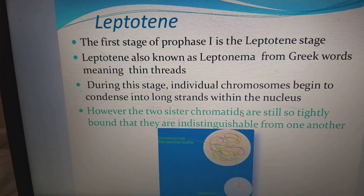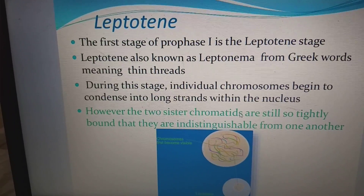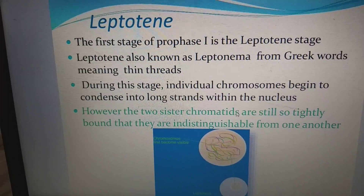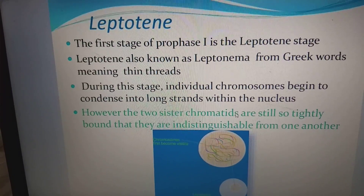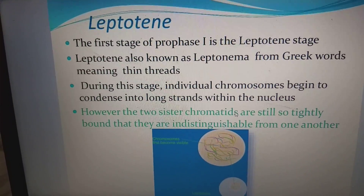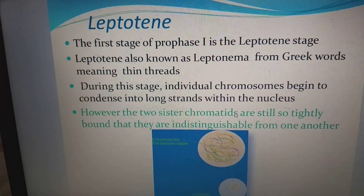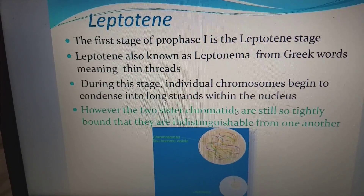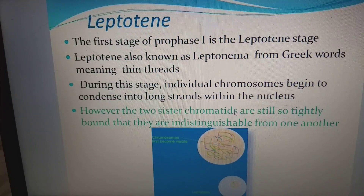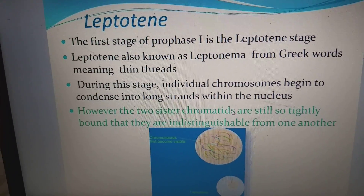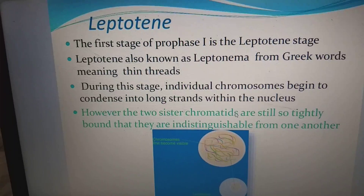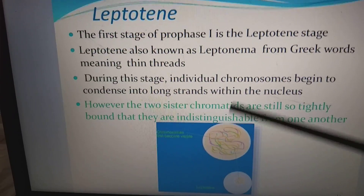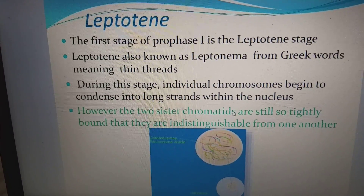The first stage of prophase I is the leptotene stage, also known as leptonema — from Greek words meaning thin threads. During this stage, individual chromosomes begin to condense into long strands within the nucleus. However, the two sister chromatids are still tightly bound and indistinguishable from one another. The formation of thin thread-like structures is seen in the leptotene stage, which is why it is named leptotene.